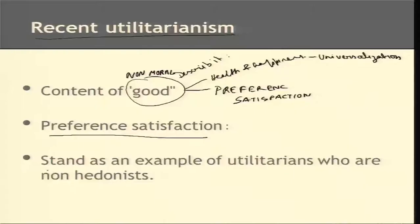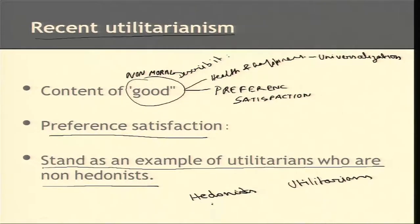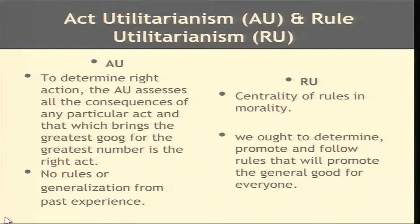Preference satisfaction is an example of utilitarians who are non-hedonists. We have been talking about people who have been both Hedonists and utilitarians. This is an example of somebody who need not be a Hedonist — may or may not be a Hedonist — but is a utilitarian nevertheless, having one's own preferences satisfied. These preferences could be Hedonistic or not.